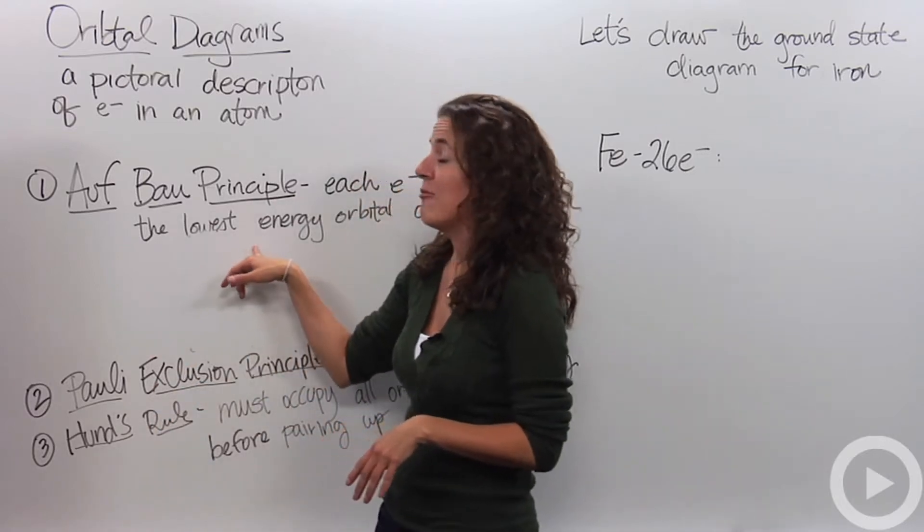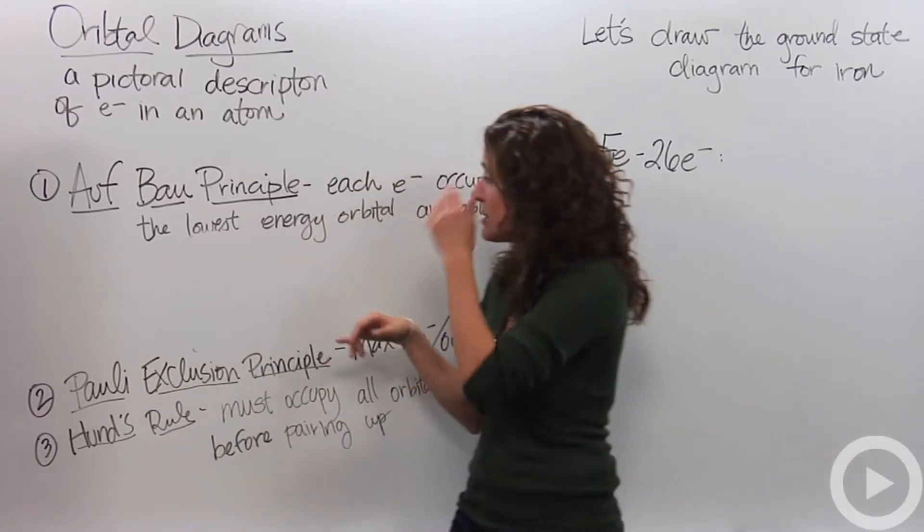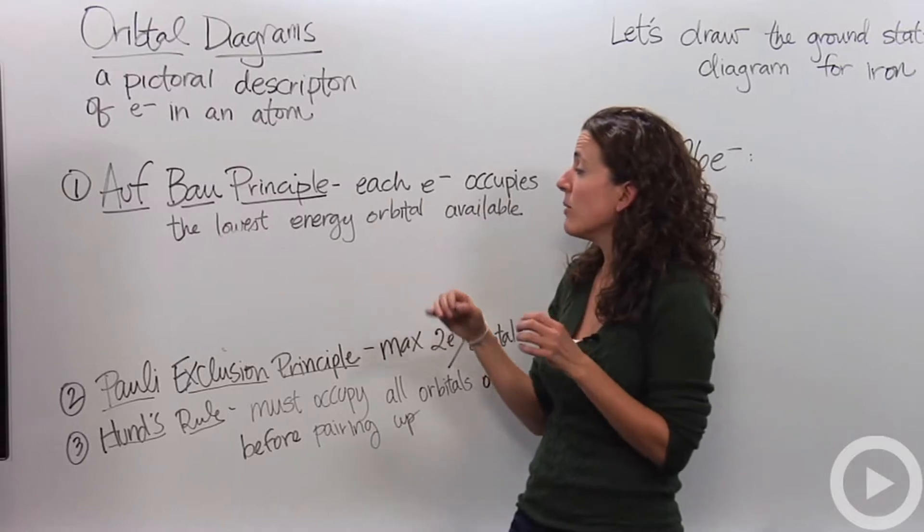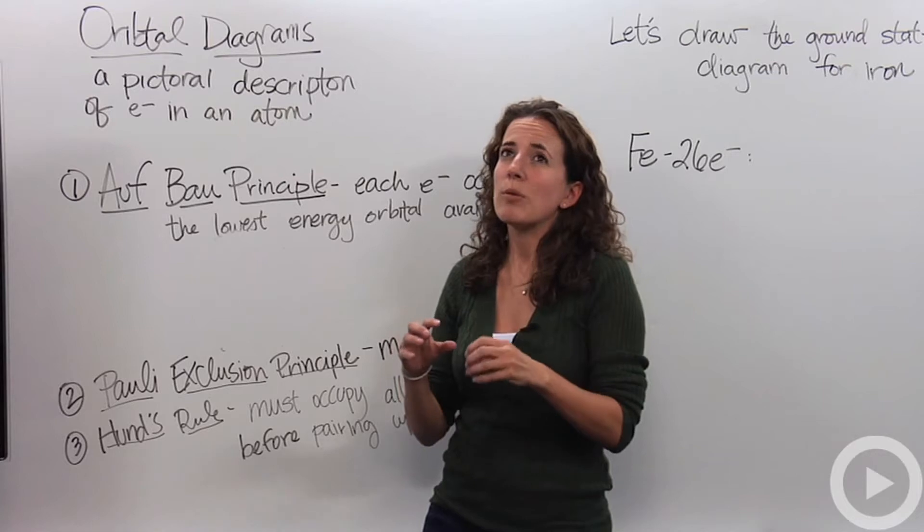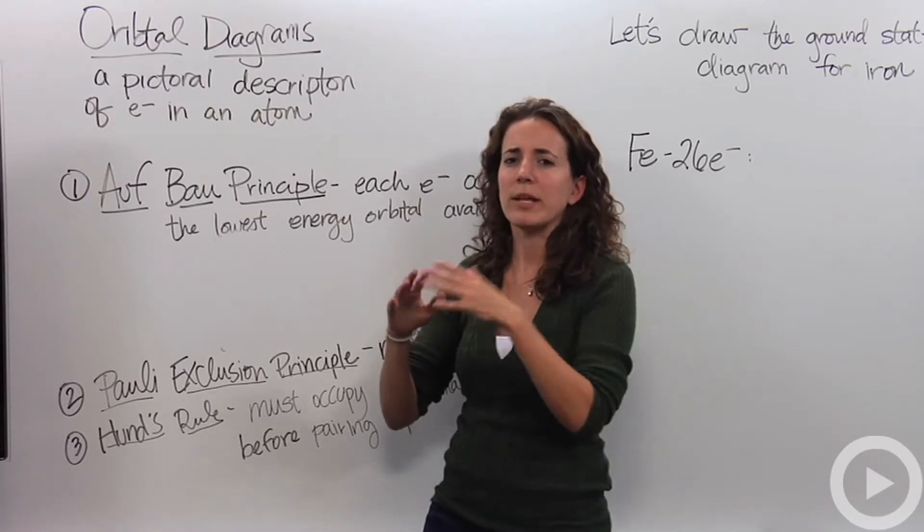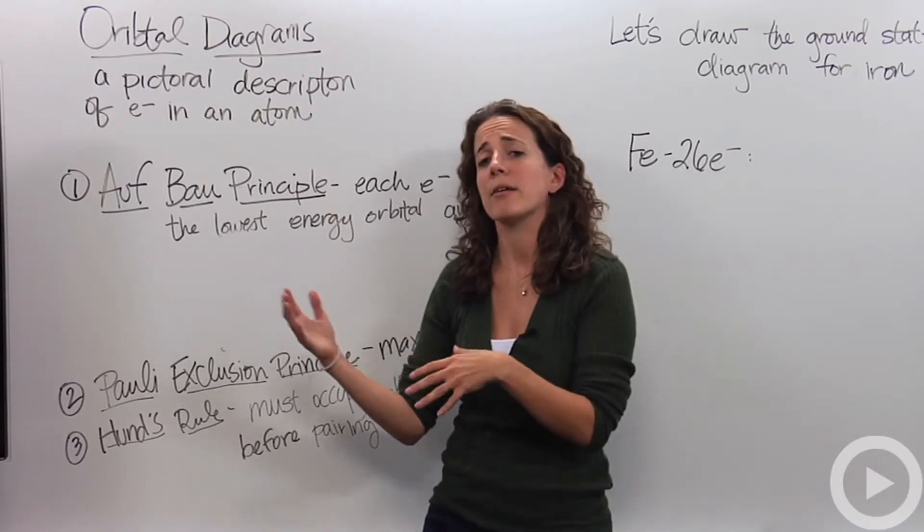The first one being the Aufbau principle. The Aufbau principle states that each electron occupies the lowest energy orbital available. So we have to think, with the sub-levels, the orbitals, how are they falling in terms of energy? Which one's lower in energy, which one's higher in energy?